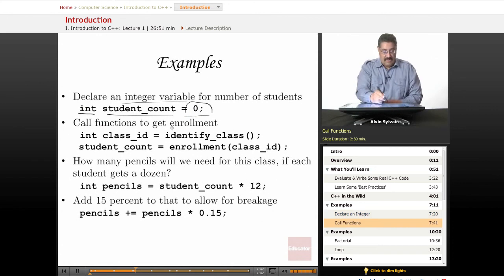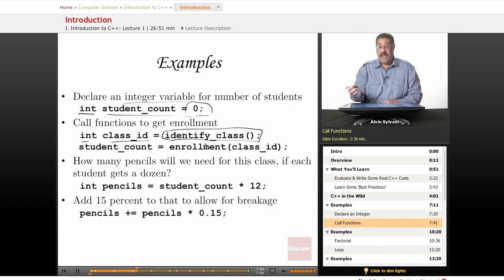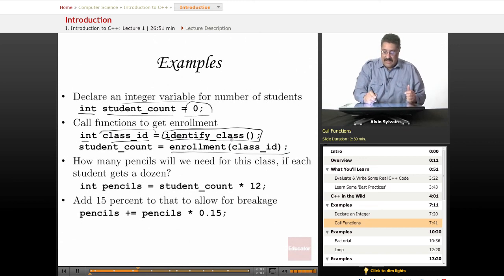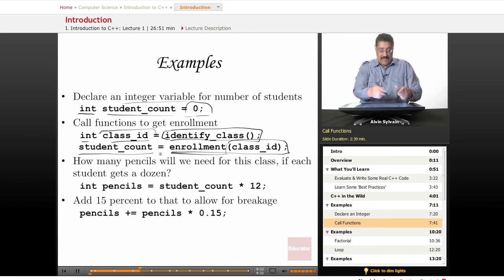We're going to call some functions here to get the current enrollment. So integer class ID, we have an ID that identifies this class among different classes. So this is the function we will call, return an integer that will be stored in class ID. Now we want to know how many students are in this class. So we'll call this other function, and we'll tell it what the class ID is that we're interested in. It will look up in the database, or in memory, or wherever it happens to be kept. That's a piece that we haven't written yet, or it's been written, we don't have it here. But this particular function will return how many students there are.